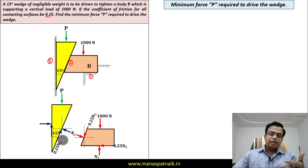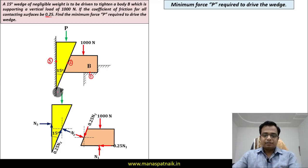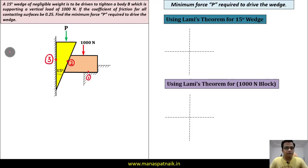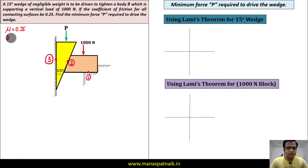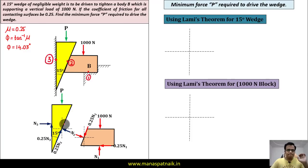The coefficient of friction mu is 0.25 at every point of contact. The angle of friction can be calculated as tan⁻¹(mu). Putting in 0.25, this works out as 14.03 degrees. Now let me show you all the forces acting.